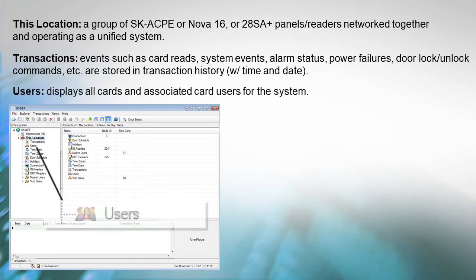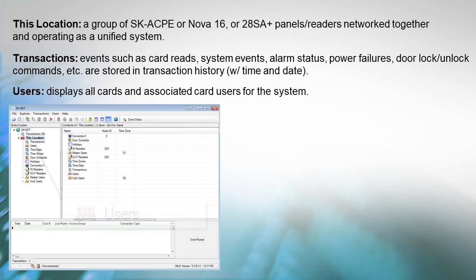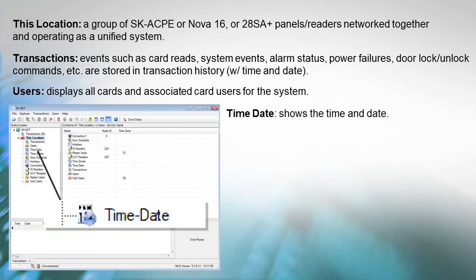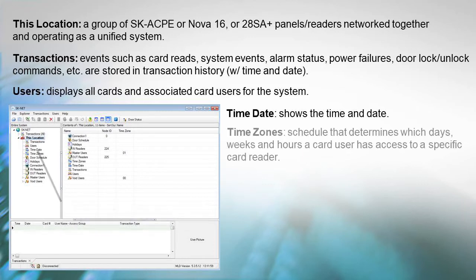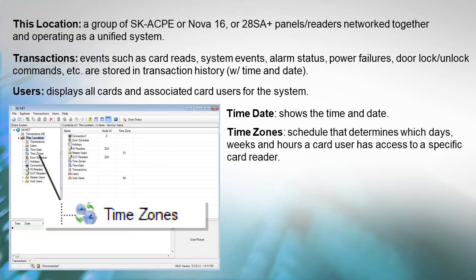Users: This screen displays all cards and associated card users for the system. Time Date: Shows the time and date for the system. Time Zones: Is a schedule that determines which days of the week and hours of the day that a card user has access to a specific card reader.